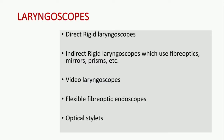There are various types of laryngoscopes: direct rigid laryngoscopes, indirect rigid laryngoscopes which use fiber optics, mirrors, or prisms, video laryngoscopes, flexible fiber optic endoscopes, and also optical stylets. In this video we will be talking about direct rigid laryngoscopes.